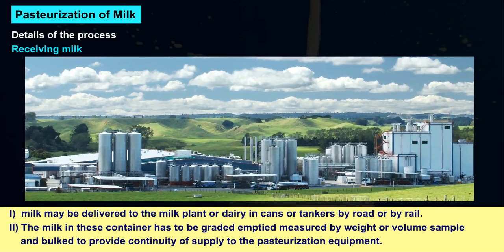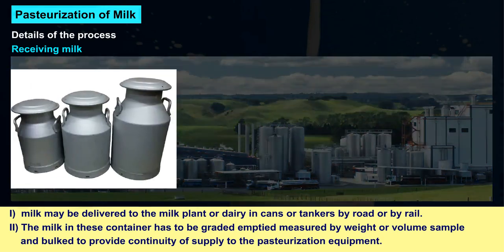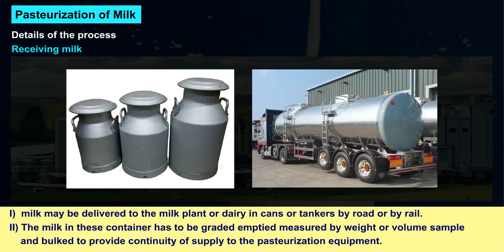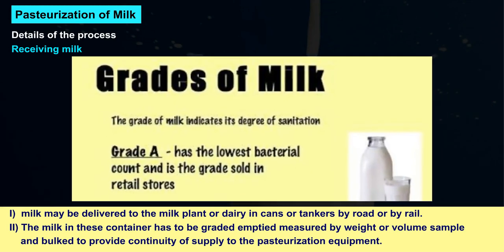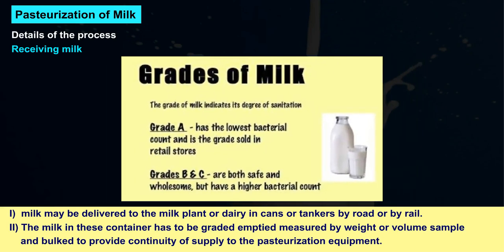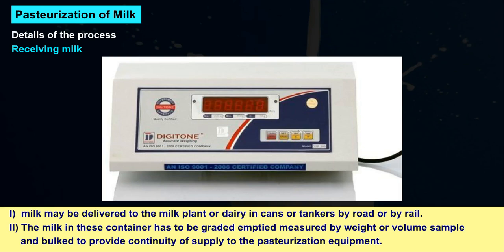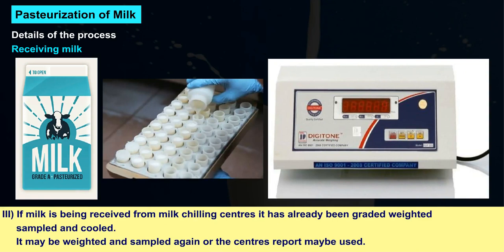Details of the process. First, receiving milk. Milk may be delivered to the milk plant or dairy in cans or tankers by road or by rail. The milk must be graded, emptied, measured by weight or volume, sampled, and bulked to provide continuity of supply to the pasteurizing equipment. If milk is received from milk chilling centers, it has already been graded, weighed, sampled, and cooled. It may be weighed and sampled again, or the center's report may be used.